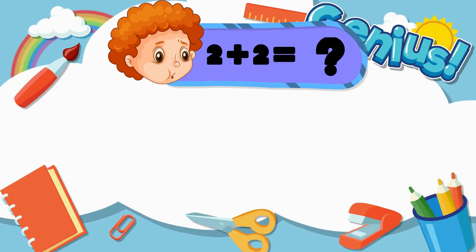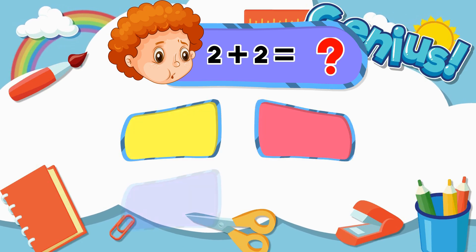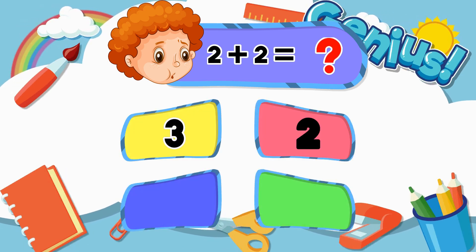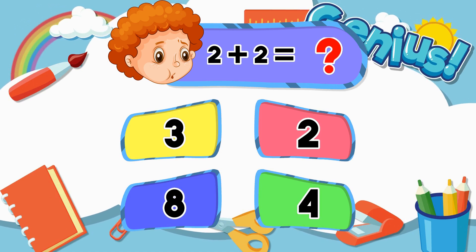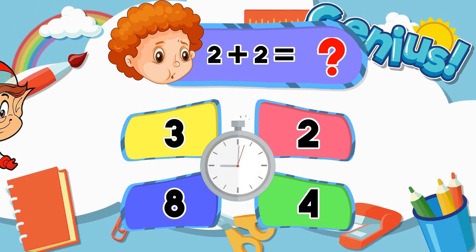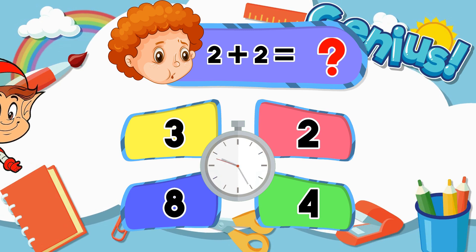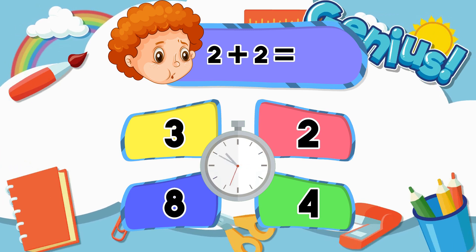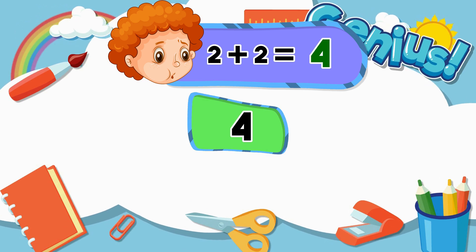What is 2 plus 2? Options: 2, 3, 8, 4. Answer: 4.